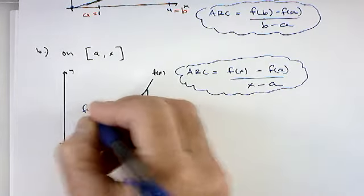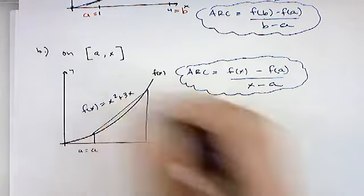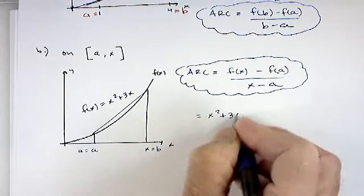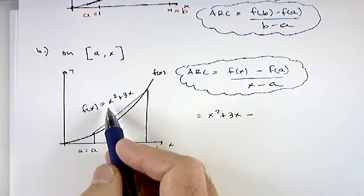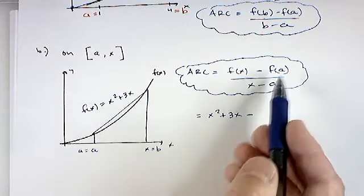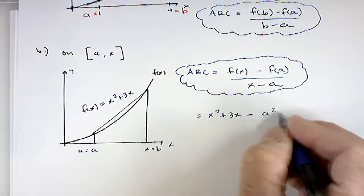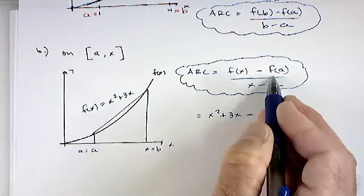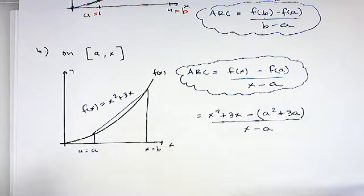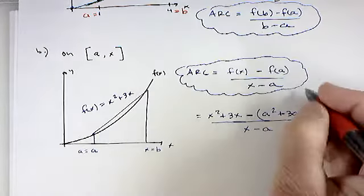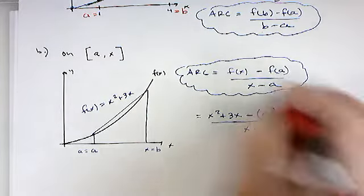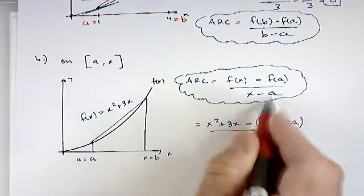This formula is something you'll be asked to simplify often — you're really just finding the average rate of change between A and some general x-value. For our function f(x) = x² + 3x, F(x) is x² + 3x, and F(a) means you plug a in for both x's, giving a² + 3a. Since we're subtracting a sum, it's important to use parentheses. To simplify this means to cancel out the (x − a) term in the denominator.